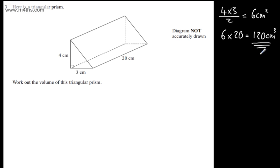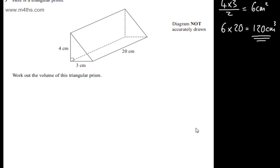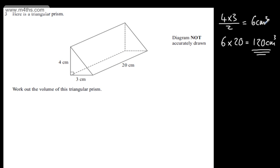We've got 120 centimetres cubed, which we need to write on. If we have a length, it will be centimetres, if we have an area, it will be centimetres squared, if we have a volume, it will be centimetres cubed, assuming the measurements are in centimetres.